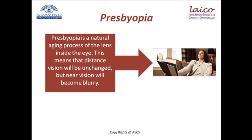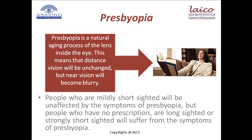Finally, presbyopia is the natural aging process of the lens inside the eye. This means that distance vision will be unchanged, but near vision will become blurry. People who are mildly short sighted will be unaffected by the symptoms of presbyopia, but people who have no prescription, are long sighted, or strongly short sighted will suffer from the symptoms of presbyopia.